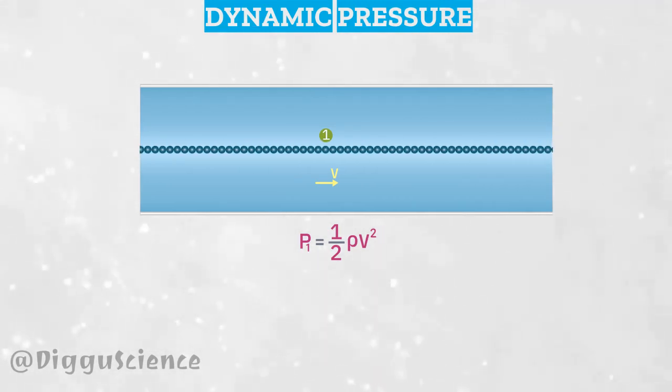Thus, at the same point, the dynamic pressure value can change depending on the fluid velocity at that point.